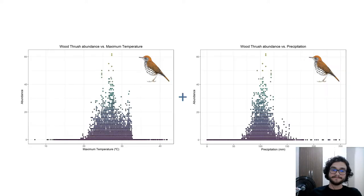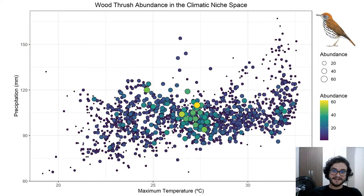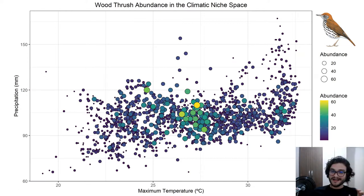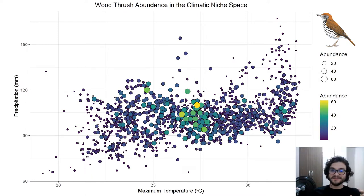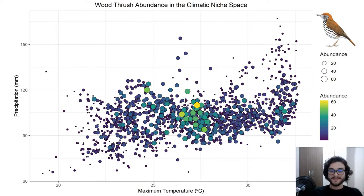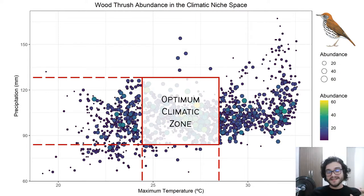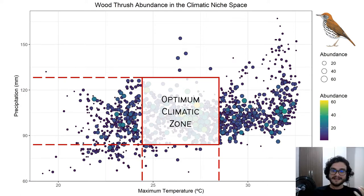For instance, here I combine the maximum temperature and the precipitation to create this figure. It's interesting to note that there's a climatic region there which represents the places in which the species is more frequent and more evident. And we can see that this is the optimum climatic zone for the species for these two variables, precipitation and maximum temperature.